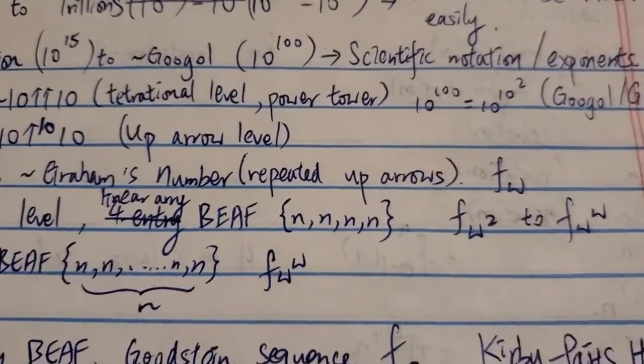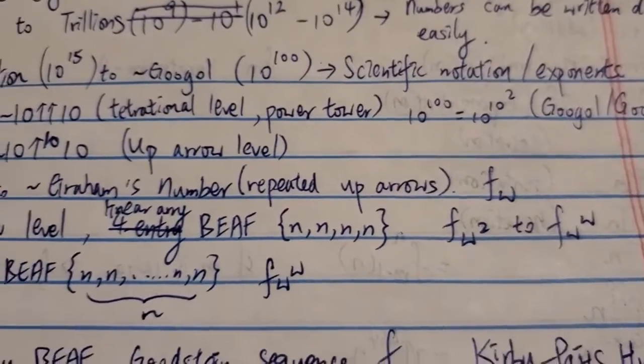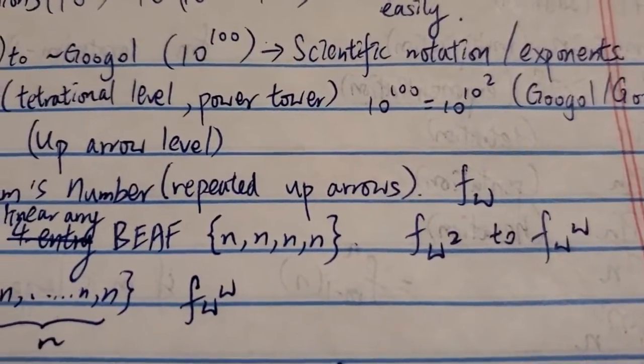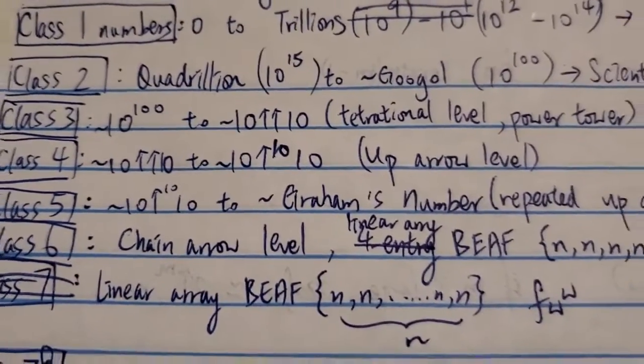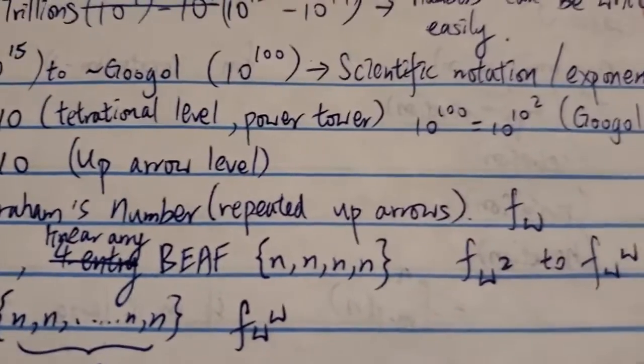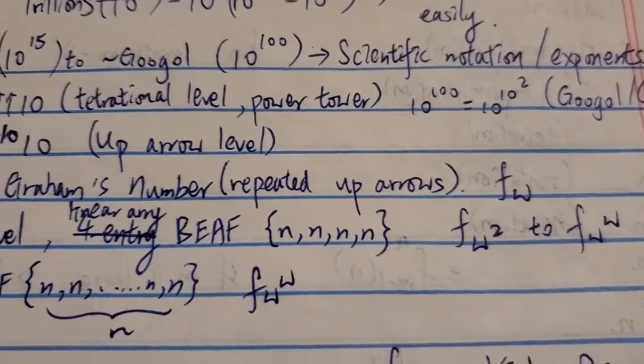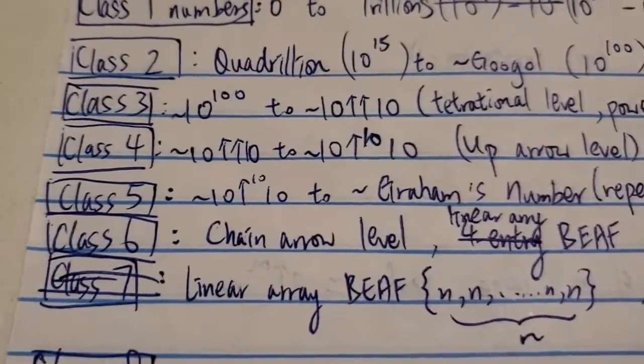Of course, I skipped something in this list, but I picked the popular ones. That's why, let's say f of omega plus 1 or plus 2, I would just say it's class 5. If it's close to f of omega squared, then I would just make it class 6.